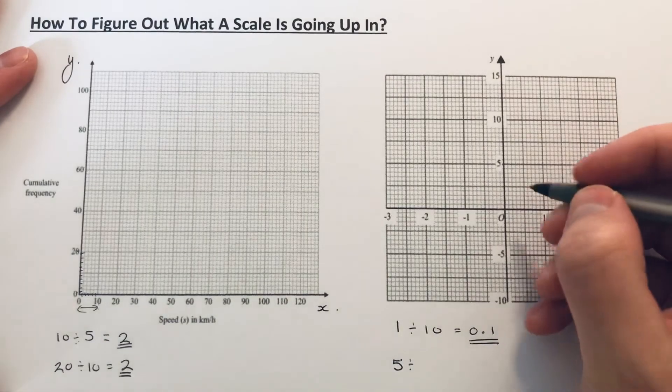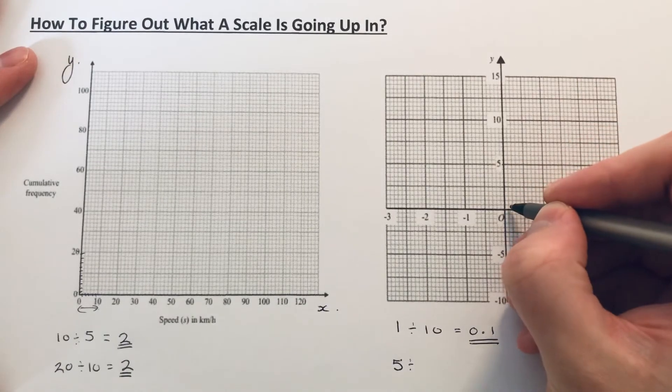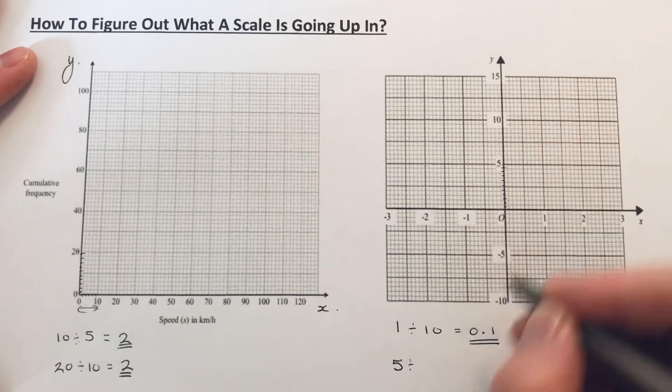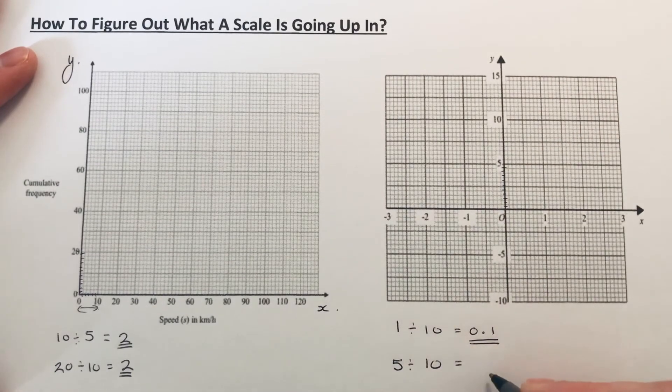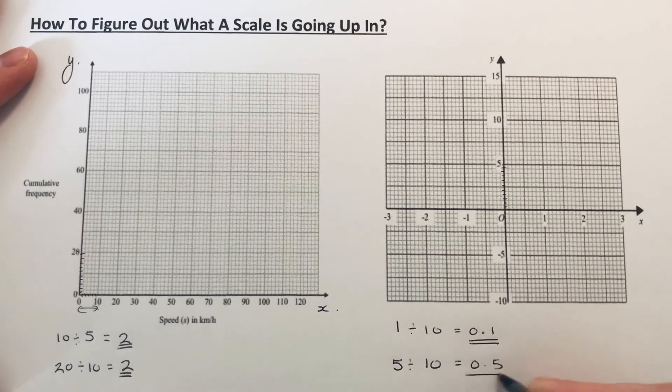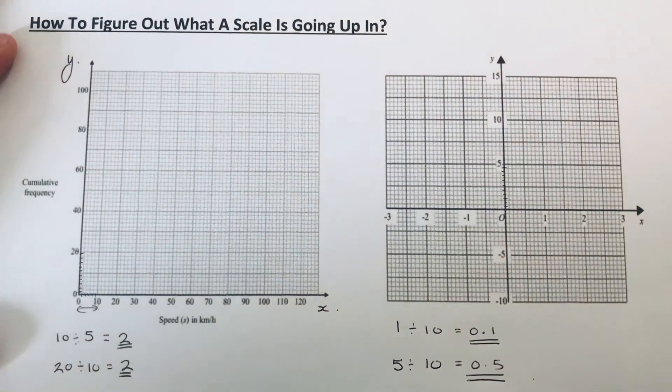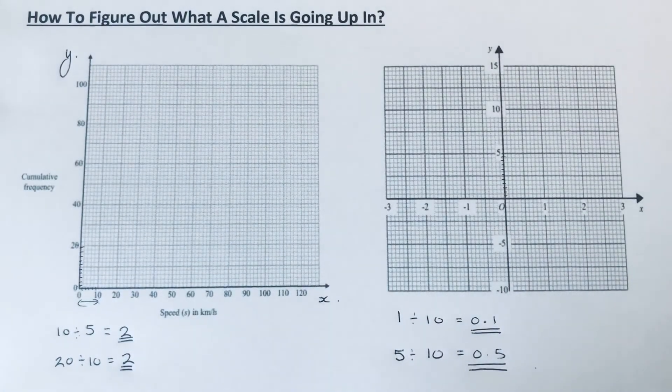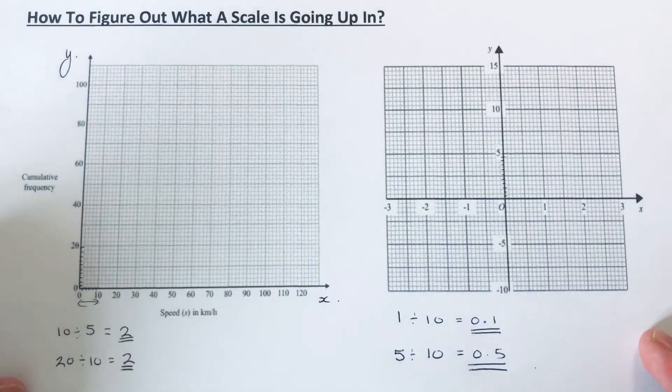So just got to divide that by how many squares we've got in between. That's one, two, three, four, five, six, seven, eight, nine, ten again. So five divided by ten is zero point five. I hope you liked this video. If you did, subscribe. Thanks for watching, bye bye.